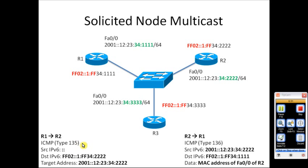As soon as R2 receives this ICMP type 135 Neighbor Solicitation, it replies by sending a Neighbor Advertisement — an ICMP packet type 136. The source IPv6 address is R2's FastEthernet 0/0 IPv6 address, and the destination IPv6 address is the multicast group address where R1 belongs. Inside the data area of the ICMP packet, R2 includes the MAC address of its FastEthernet 0/0 interface.